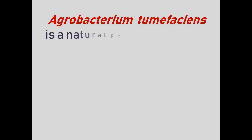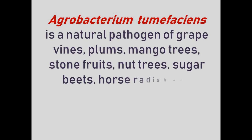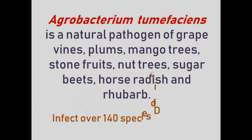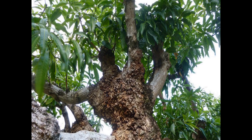Agrobacterium tumefaciens is a serious pathogen of grapevines, plum shrubs, mango trees, stone fruits, nut trees, sugar beets, horseradish, and rhubarb. It causes tumor induction in over 140 species of dicot plants. The tumor is called crown gall.